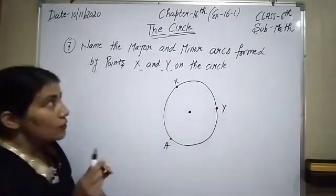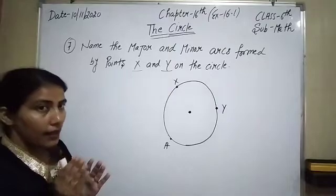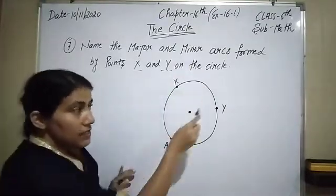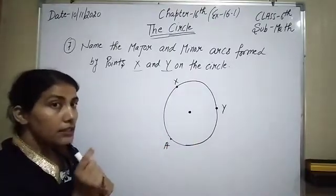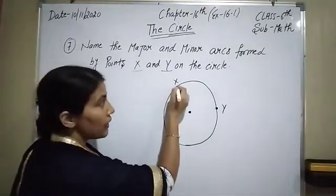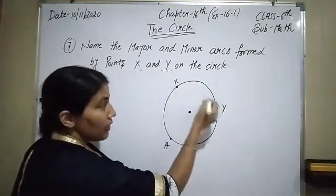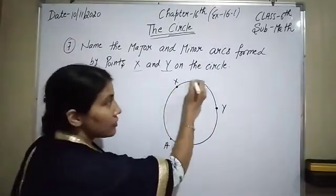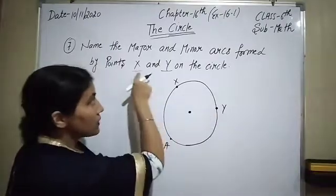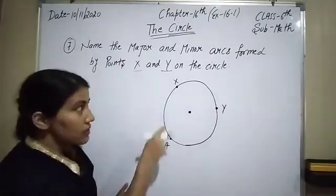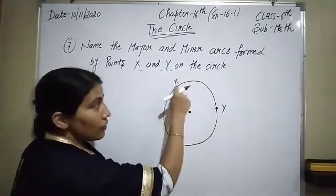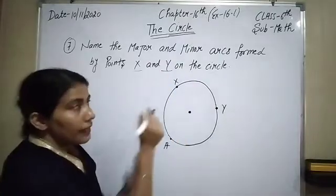What are the major and the minor arcs? Firstly I am going to explain the minor arc. The shortest distance between two points on the circumference of the circle is called the minor arc. Look — here are points X and Y on the circumference. The shortest distance between them is the minor arc, and here is the longer distance from X to Y. Concentrate on points X and Y only — the shortest distance from X to Y is the minor arc.